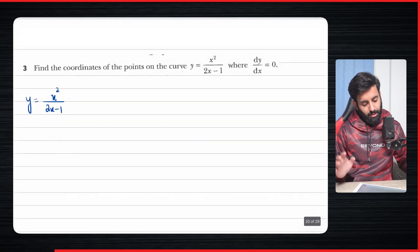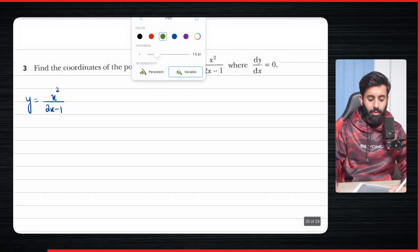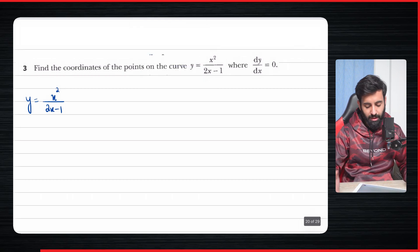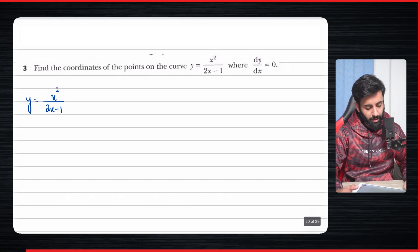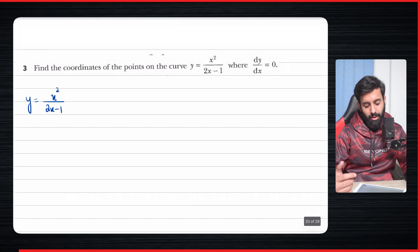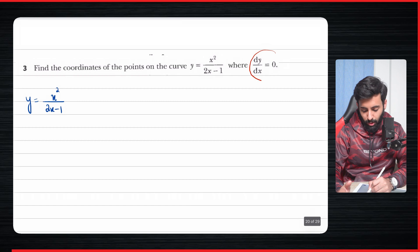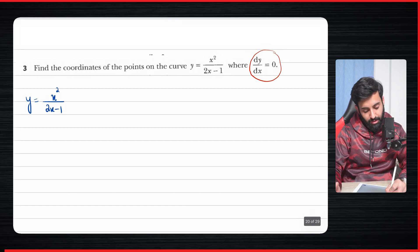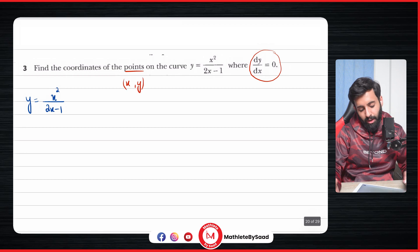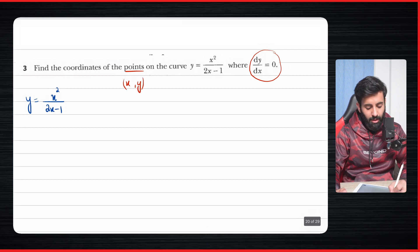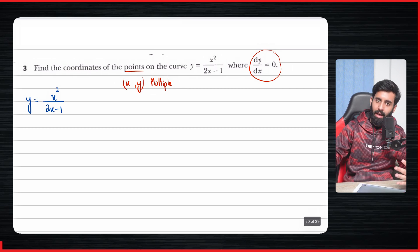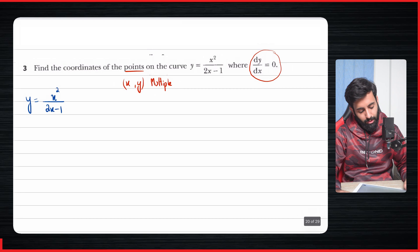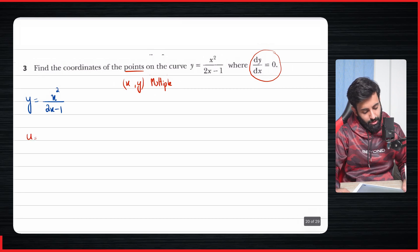Now we're going to do some word problems. Word problems involve no new concept, but the questions are slightly more complex — you need to plug in a value or set the derivative equal to a certain value. This question says: find the coordinates of the point on the curve where dy by dx equals zero. So we need to find both x and y. Since the question says 'points', there could be multiple. We'll differentiate this using the quotient rule.